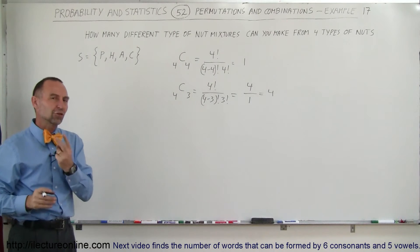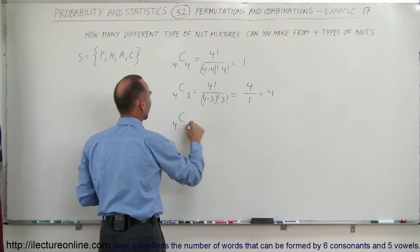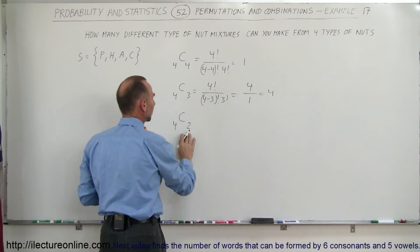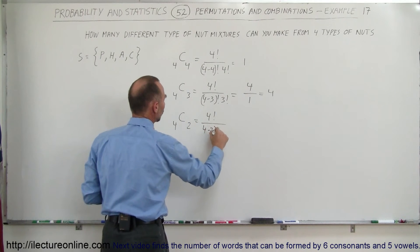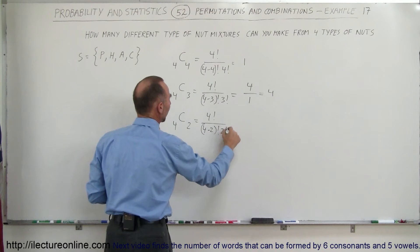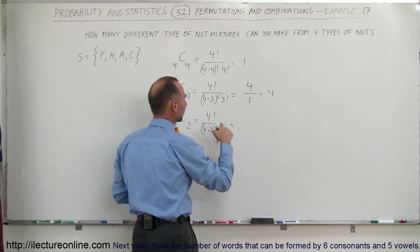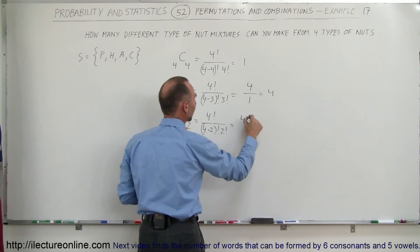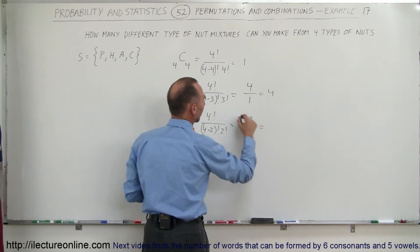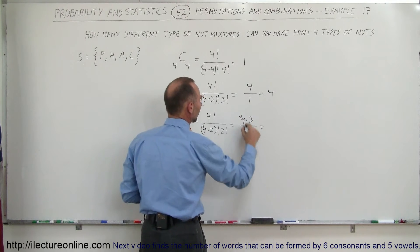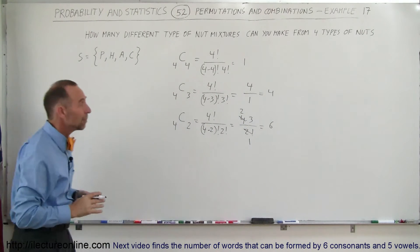Taking two nuts at a time: C(4,2) equals four factorial divided by (four minus two) factorial times two factorial. Four factorial divided by two factorial gives four times three, divided by two factorial which is two — that cancels to two times three, which is six. There are six different combinations.